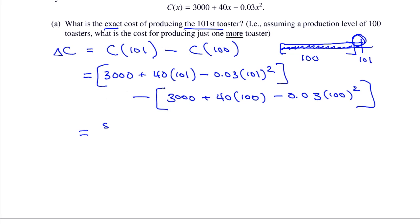When you figure that out, you get $33.97. So the cost of producing just the 101st toaster is $33.97. Something inherent in the function: the cost of producing a particular toaster depends on how many toasters you've already made. Consider fixed costs — running the lights and building regardless of production volume. The more toasters you make, the less each one costs because you're already paying for some of these things.